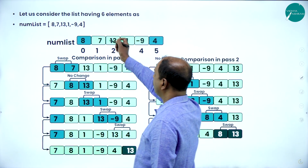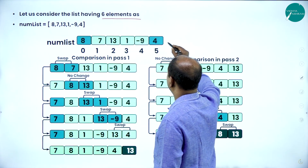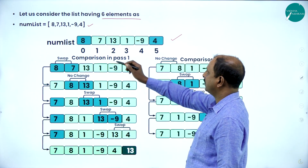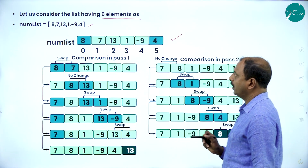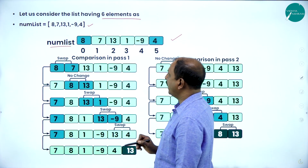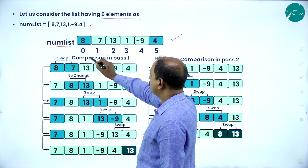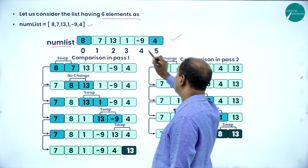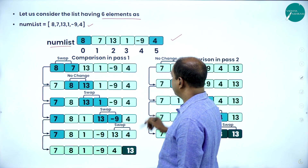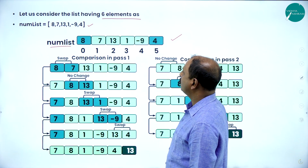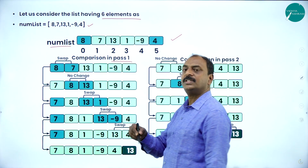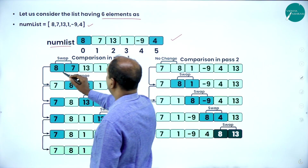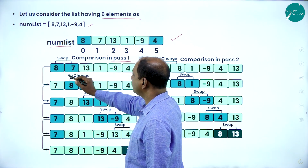Now let us take an example. Let us consider a list having six elements. The size of the list is six. The given number list is: 8, 7, 13, 1, minus 9, and 4. The name of the list is numlist. The index in a list starts with 0, 1, 2, 3, 4, 5, so the last index is 5, that is n minus 1, which is 6 minus 1. Now let us start analyzing with the technique of bubble sort.